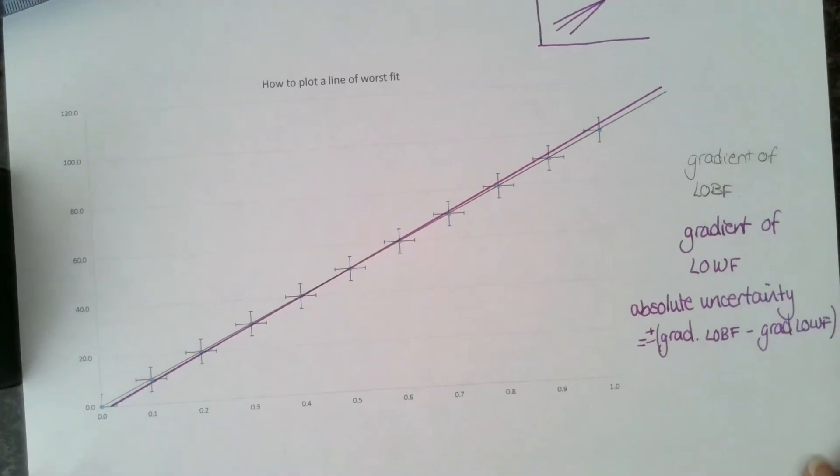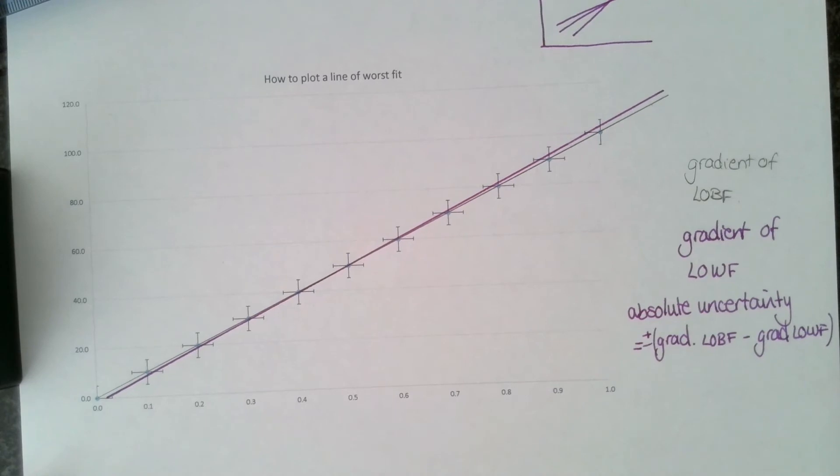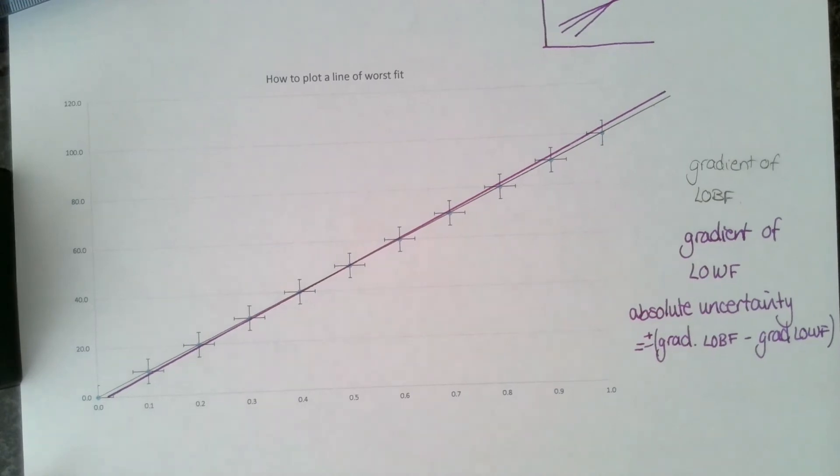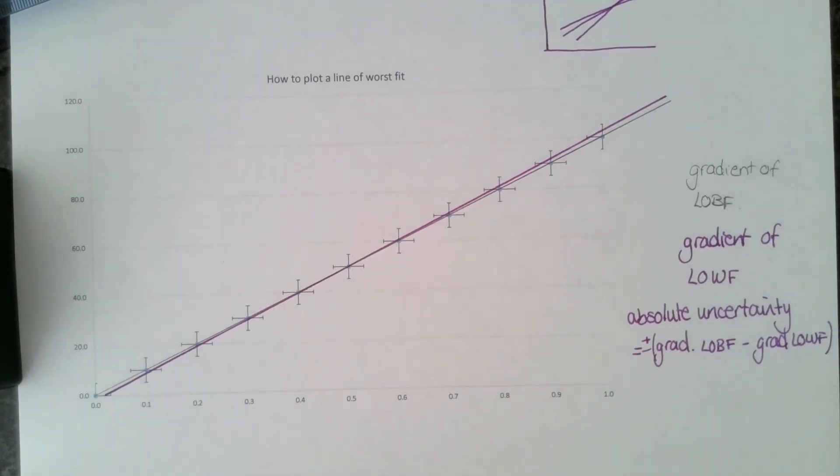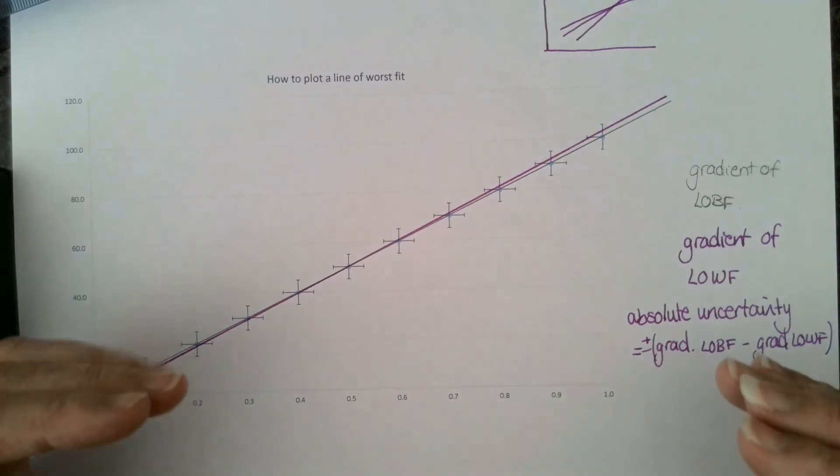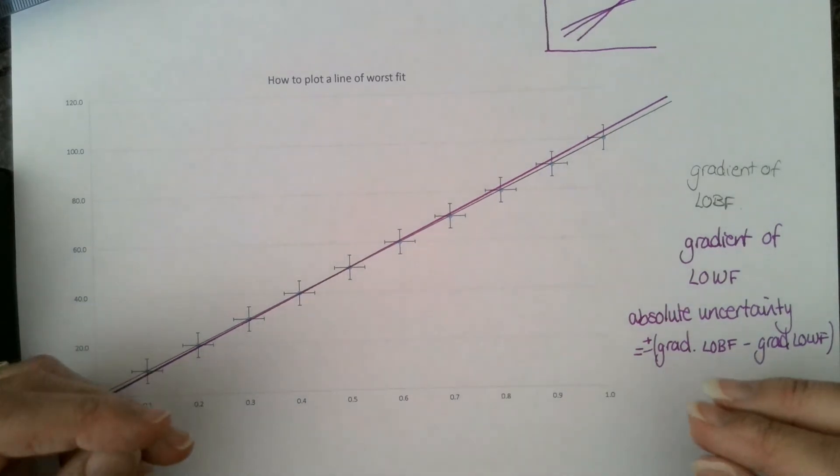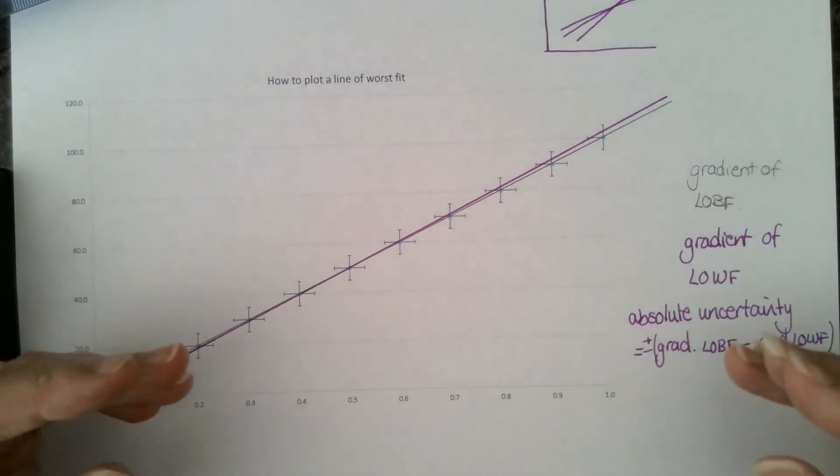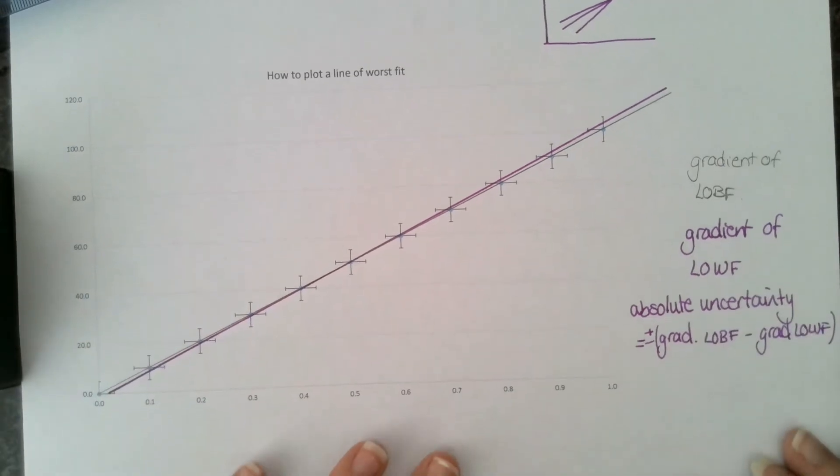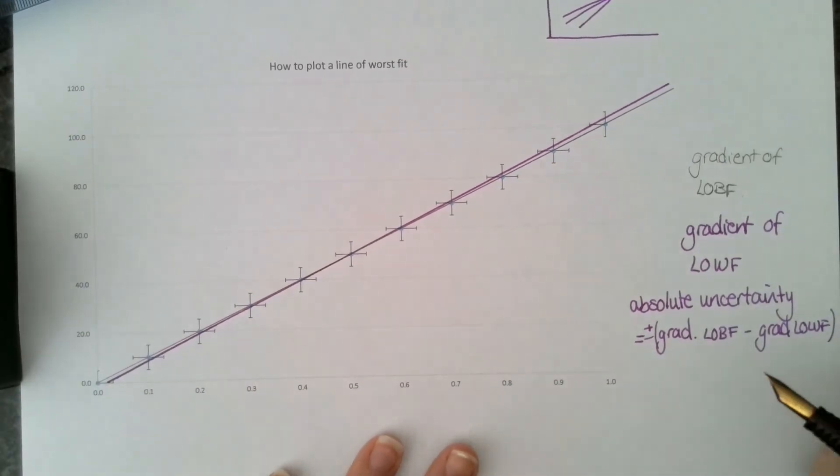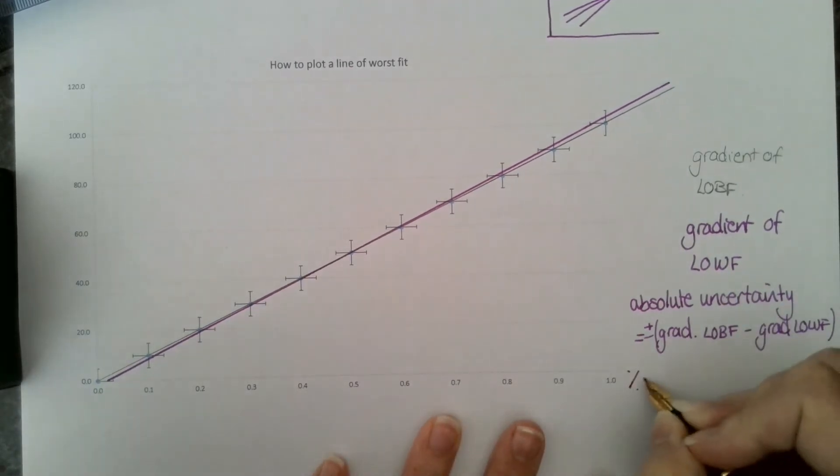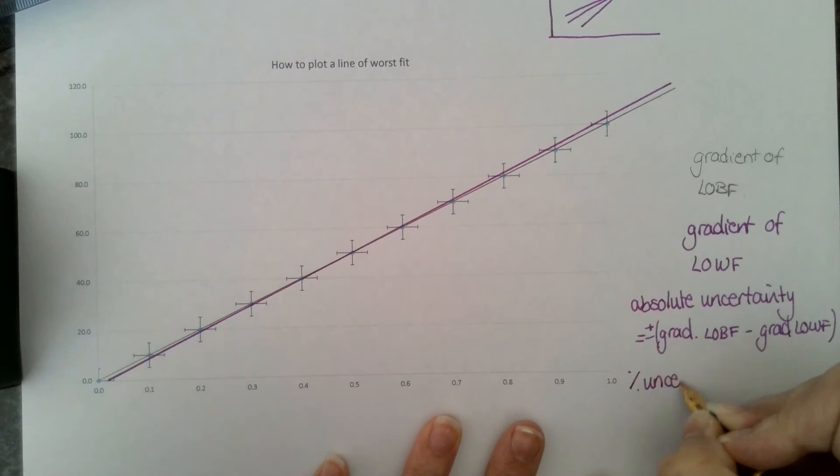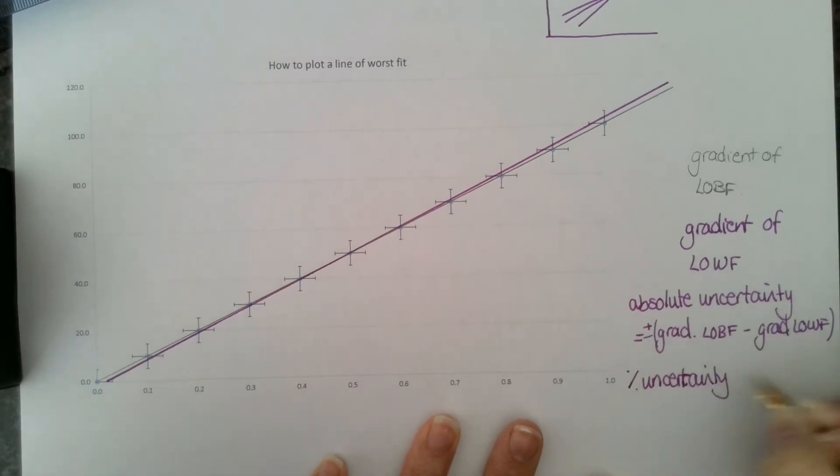However, it's rare that we use our graphs in A-level physics to just find a gradient and that's the answer. Sometimes, particularly when you get on to doing capacitance, we're using those graphs to find a gradient and then doing further manipulation of the data to discover a particular value, for example capacitance. When we're doing that, because we're then doing a calculation, we need to know the percentage uncertainty in our gradient.